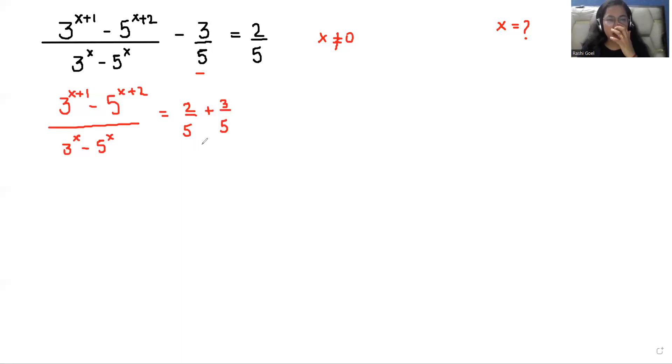As you can see on the right hand side the denominators are equal, that means we can simply add the numerator. 3 plus 2 is 5 and 5 divided by 5 is 1. On the RHS side we get 1.